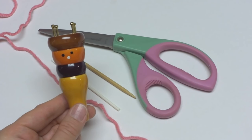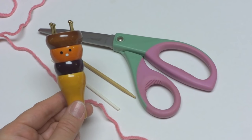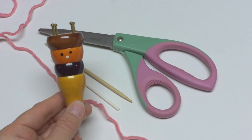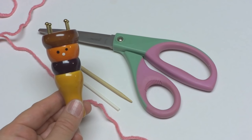Hi everyone, it's Jennifer from Fiber Flux. In this video I will show you how to use a French Knitter. These are also known as a Knitting Spool or a Knitting Nancy.